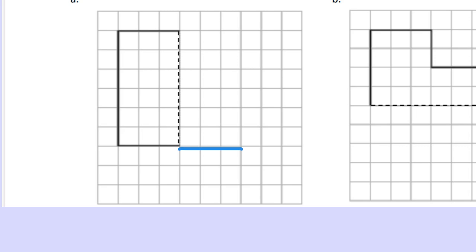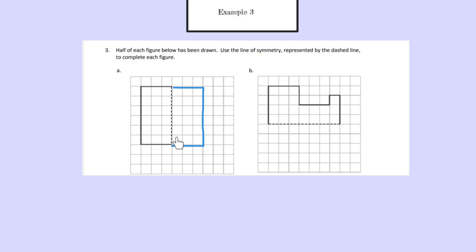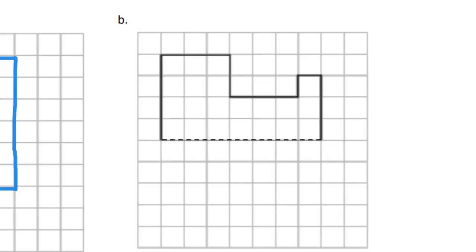So this won't be perfect, but we count over 3 and up 6, then over 3 more to complete the mirror rectangle. Now you can see that if I were to fold this shape over onto this rectangle, over this line of symmetry, it would create a mirrored object, or the same shape.